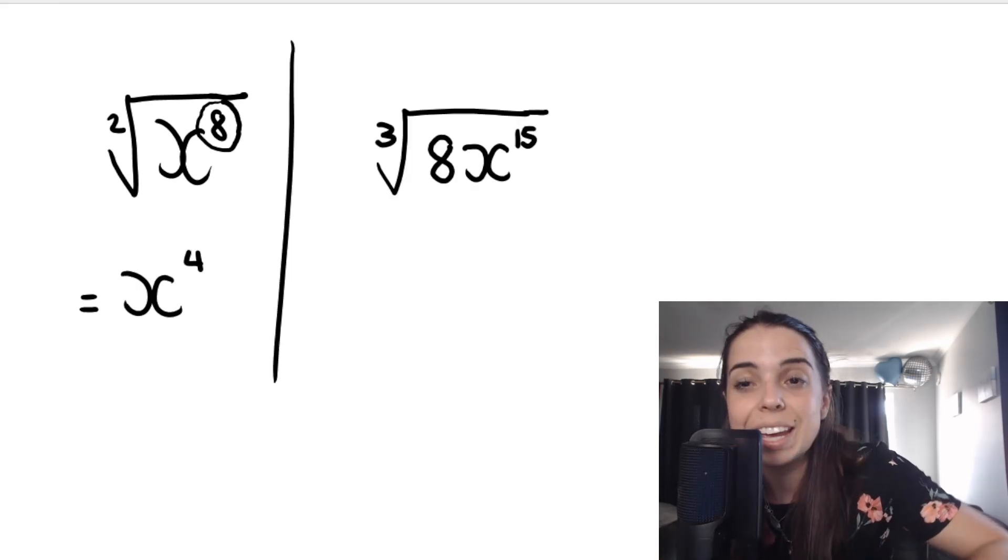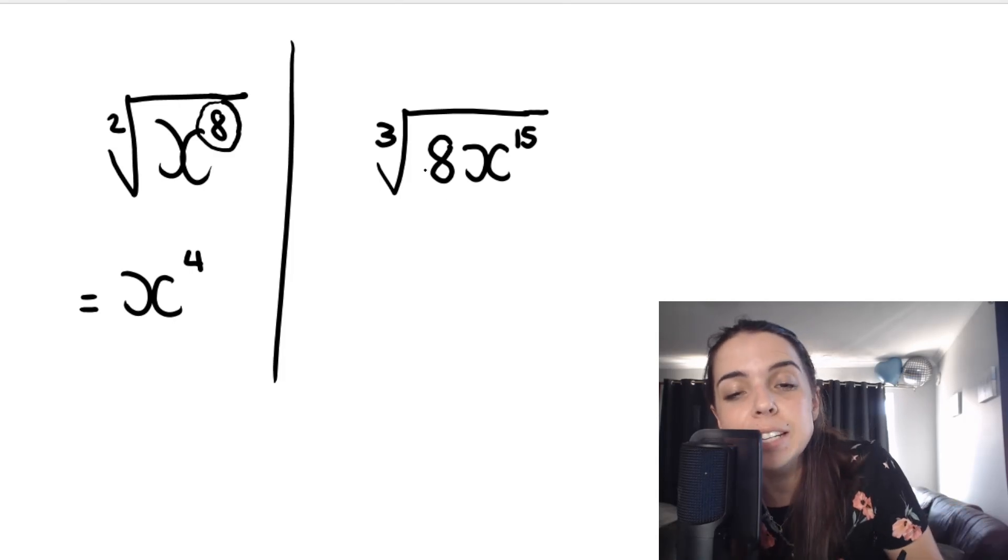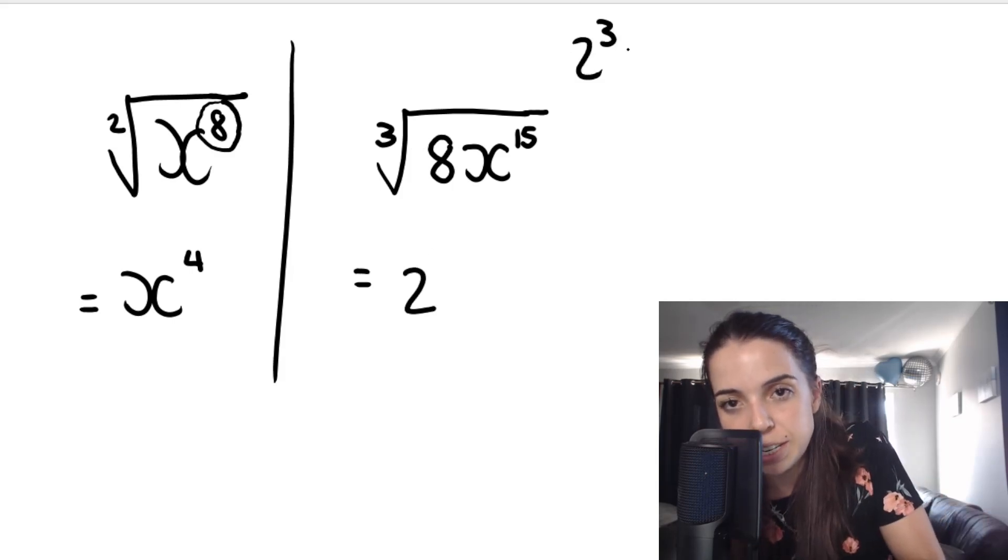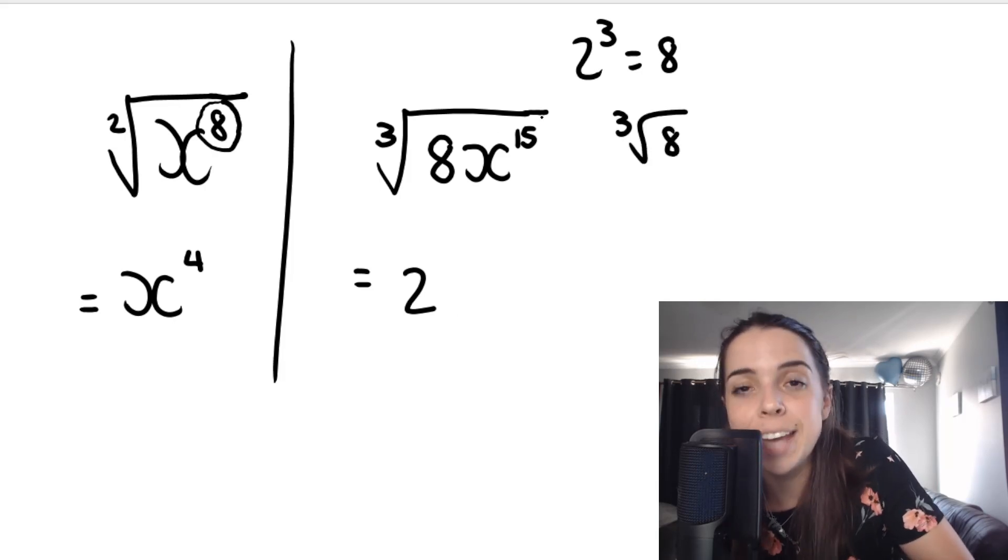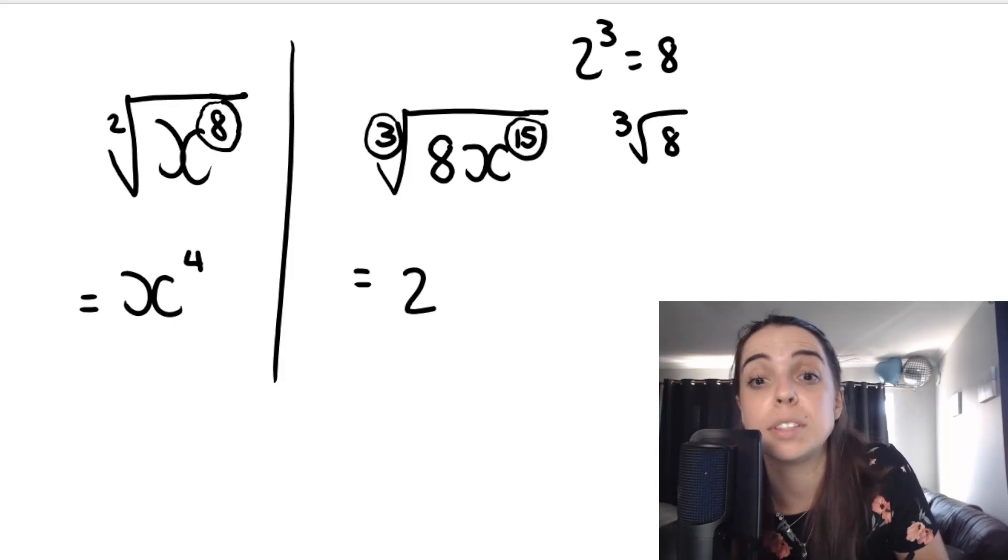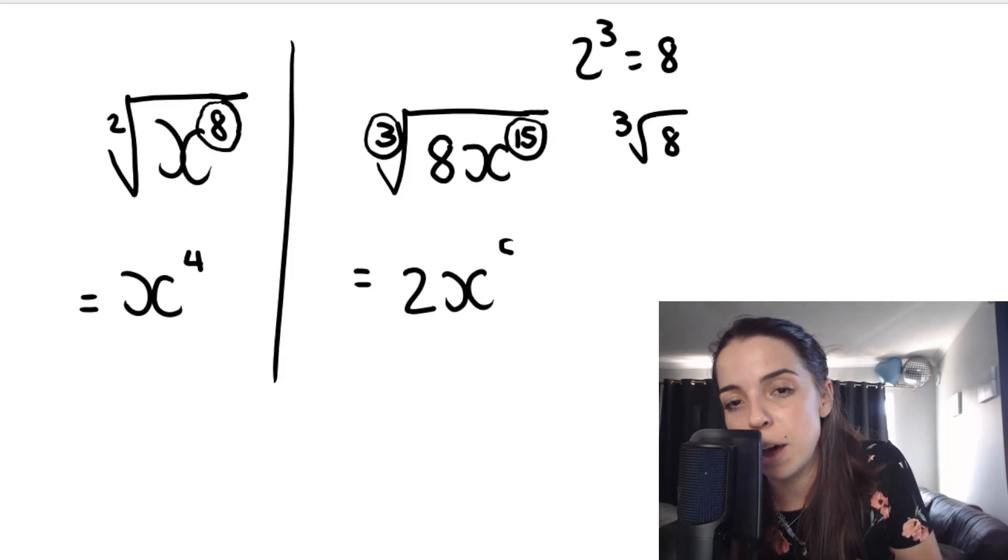Or maybe something like this. If I take the cube root of eight x to the power of 15, you cube root eight, which gets me two, because two times two times two, two cubed essentially gives me eight. So if I do the cube root of eight, I'm going to get two. And then again, that same rule, you take 15 and divide it by three because it's a cube root. That's going to be x to the power of five.